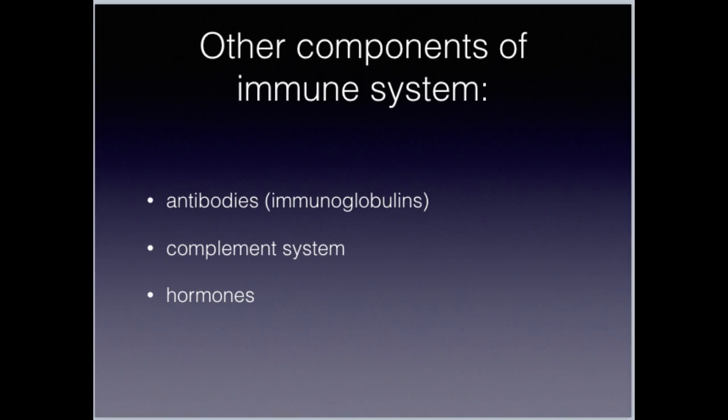The other components of the immune system: we have antibodies, which are produced by the white blood cells; the complement system, which is what we call a non-specific defense; and hormones that help promote the maturation of our T lymphocytes.